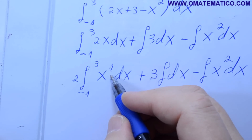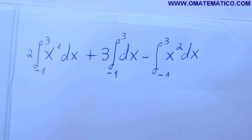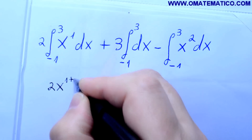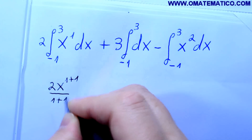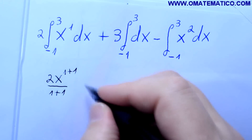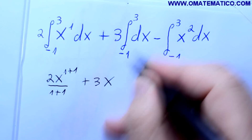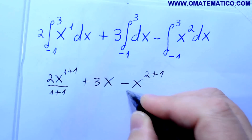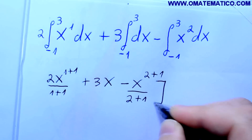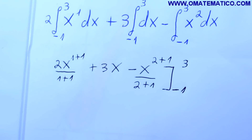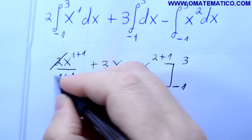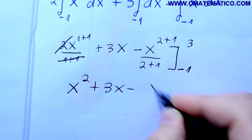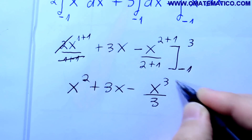Os números eu posso tirar para fora: vai dar 2 integral de menos 1 a 3 de x na 1 dx — é importante ressaltar — mais 3 integral de dx. E aqui não tem nada para vir para fora, então fica só integral de x² dx. Resolvendo: 2x na 1 mais 1 sobre 1 mais 1, que é o primeiro, mais 3x — integral de dx — menos x na 2 mais 1 sobre 2 mais 1, de menos 1 a 3. Aqui é 2, corta com esse 2, vai dar x ao quadrado mais 3 vezes x menos x na 3 sobre 3, de menos 1 a 3.